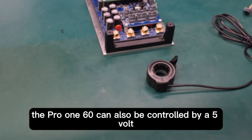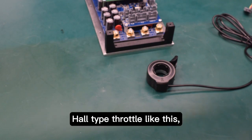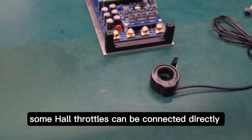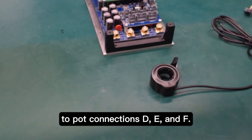The Pro 160 can also be controlled by a 5V hall throttle like this. Depending on their properties some hall throttles can be connected directly to pot connections D, E and F.